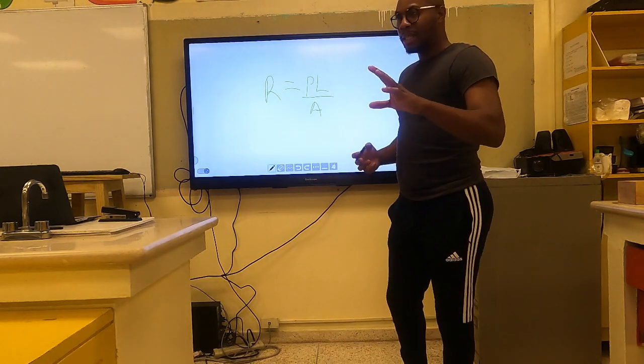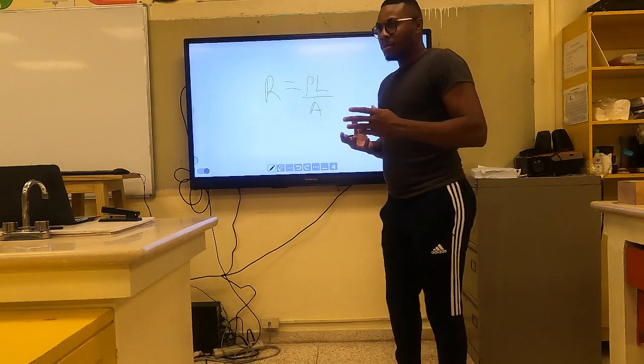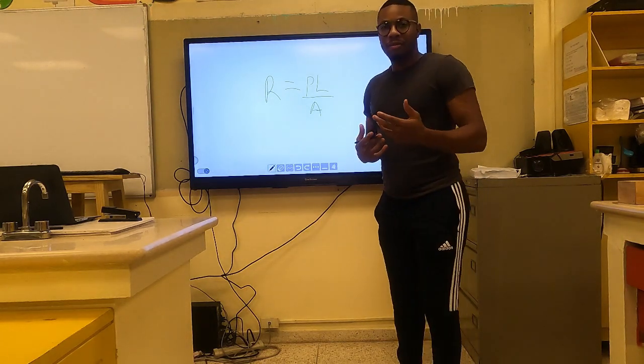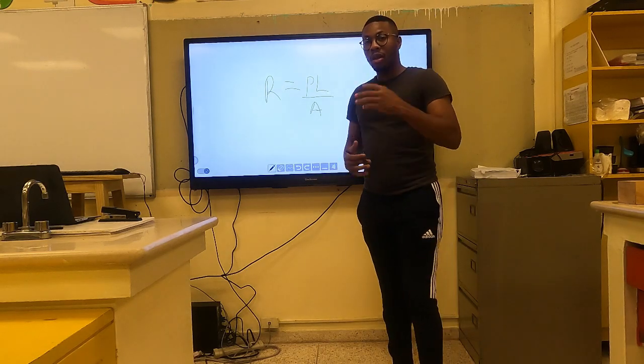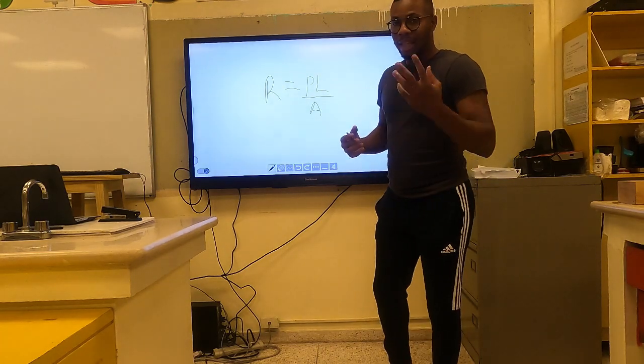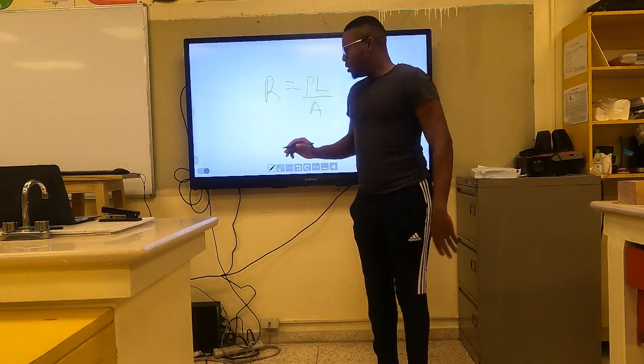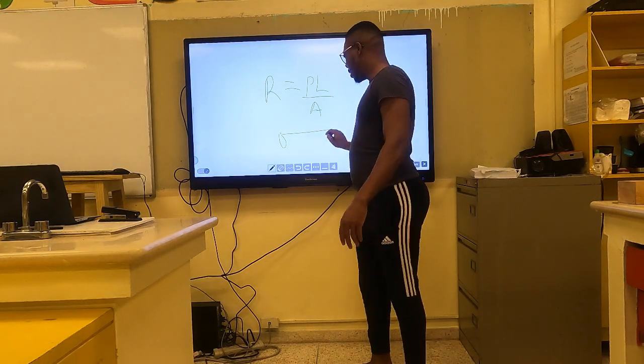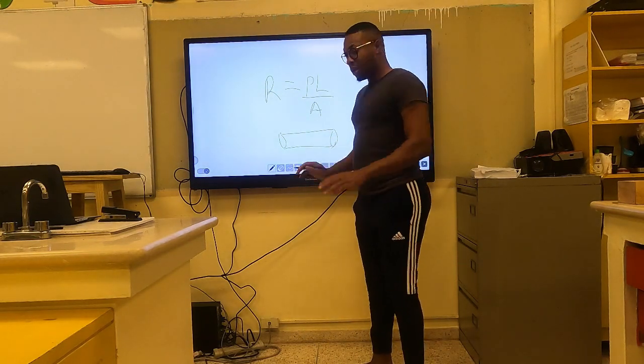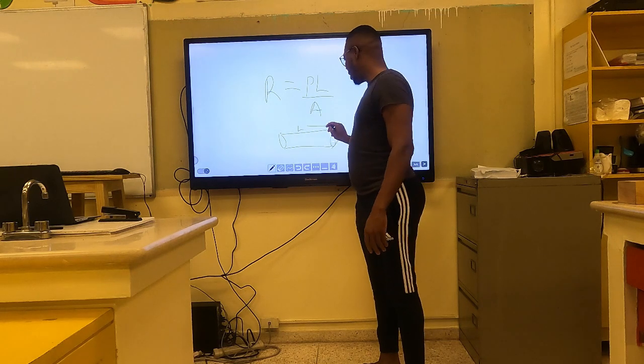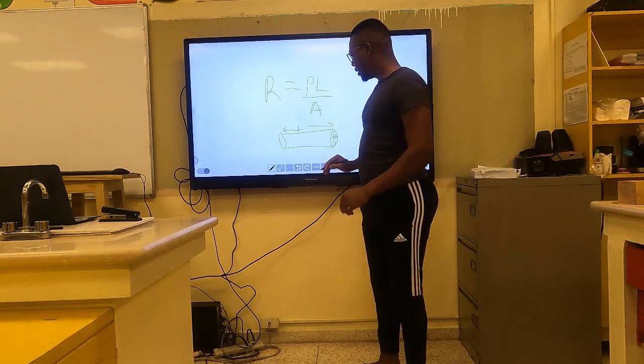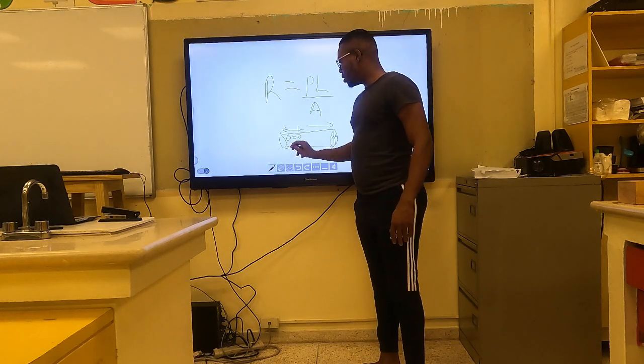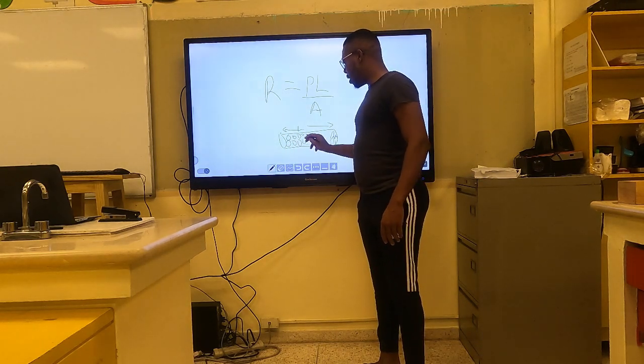So what we're going to do is understand how these different variables can affect the current flow through a wire and also affect the overall resistance. If we get a piece of wire of a certain length with a certain cross-sectional area, as you can imagine, inside of this wire there are different ions or atoms.